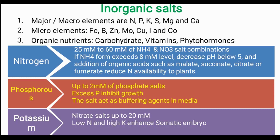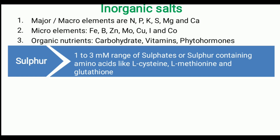Another macro element is potassium. Nitrate salts up to 20 millimolar are added as a potassium supplement. Generally, low nitrogen and high potassium enhance somatic embryogenesis, and somatic embryogenesis medium is prepared considering this fact. Sulfur is added at a maximum of 3 millimolar and minimum of 1 millimolar in the nutrient medium, as sulfate or sulfur-containing amino acids like cysteine, methionine, and glutathione.